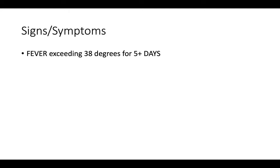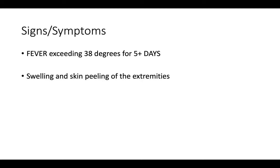Moving on to the signs and symptoms — the main one being a fever. This is a continuous fever that lasts for at least 5 days, meaning the child will have a fever on days 1, 2, 3, 4, and 5. They can also get edema, usually of the hands and feet, and a rash on the trunk which is quite erythematous. Conjunctivitis is another feature, usually bilateral but most of the time quite mild.